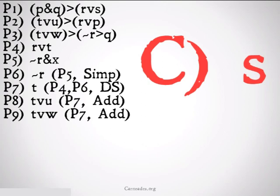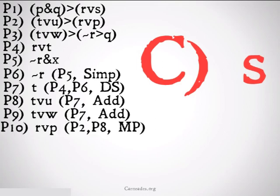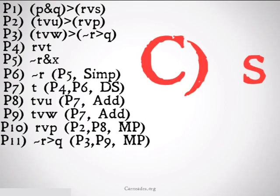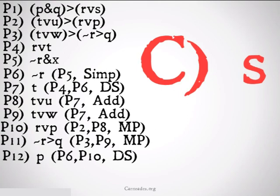Now we have these nice antecedents of our implications in premises two and three, so we're just going to do some modus ponens on these things. We have R or P from premise two, premise eight, modus ponens, and we have not R implies Q from premise three, premise nine, modus ponens. Now we have some new things to work with, and once again, we have this nice little not R that's going to be really useful. We're going to use that not R in a disjunctive syllogism to get P from premise six, premise ten, disjunctive syllogism, and we're going to use the not R once again to conclude Q from premise six, premise eleven, modus ponens.